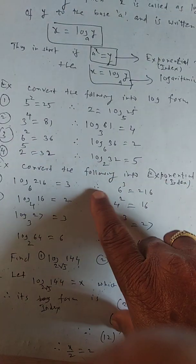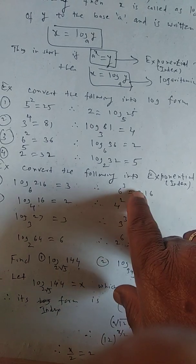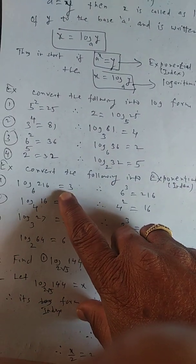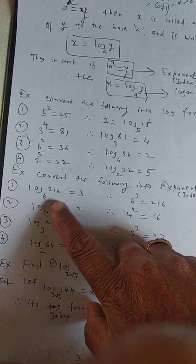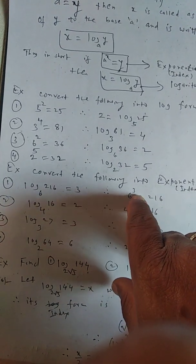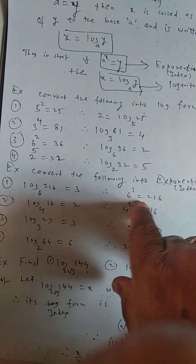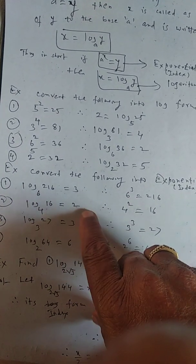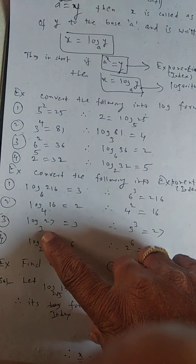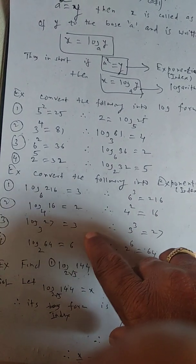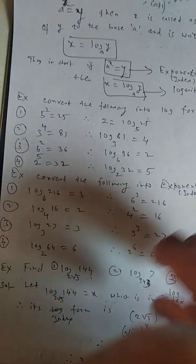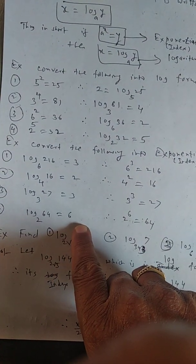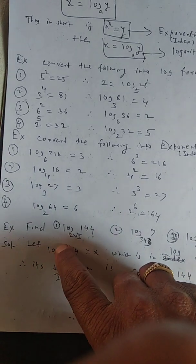The converse part — convert the following into exponential form. Log forms are given: log_6(216) = 3, so its exponential form is 6 cubed = 216. Log_4(16) = 2, so 4 squared = 16. Log_3(27) = 3, so 3 cubed = 27. Log_2(64) = 6, so 2 raised to 6 = 64.